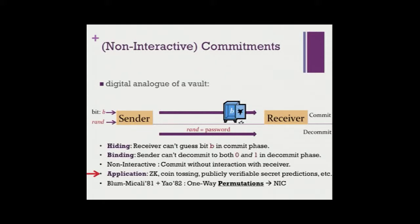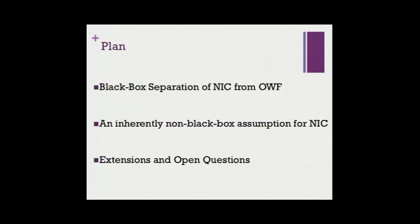You can think of many applications for this basic primitive — like zero-knowledge proofs and coin tossing. If you care about certain applications, the non-interactive property is particularly valuable. From the early 80s, we know that one-way permutations are sufficient to get this primitive, based on the work of Yao, HILL, and the hardcore lemma of Blum and Micali. In the rest of the talk, I'll show high-level ideas of the black-box separation, then show an assumption useful for non-interactive commitments but only in an inherently non-black-box way, and then open questions.